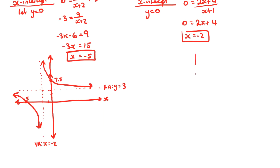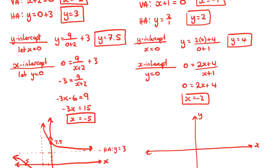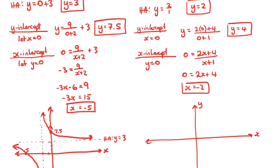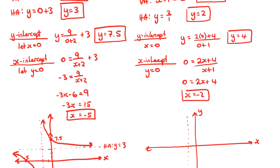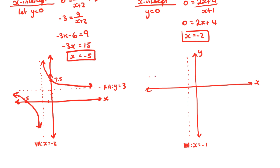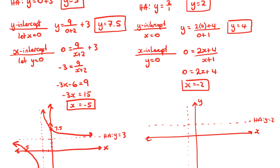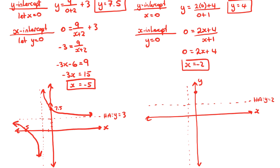Now let's sketch the second example. We draw y and x axes with dotted lines for the asymptotes. The vertical asymptote is at x equals negative one and the horizontal asymptote is at y equals two. The y-intercept is at four and the x-intercept is at negative two. We sketch the curve with a rough shape passing through these key points but asymptoting at the dotted lines.